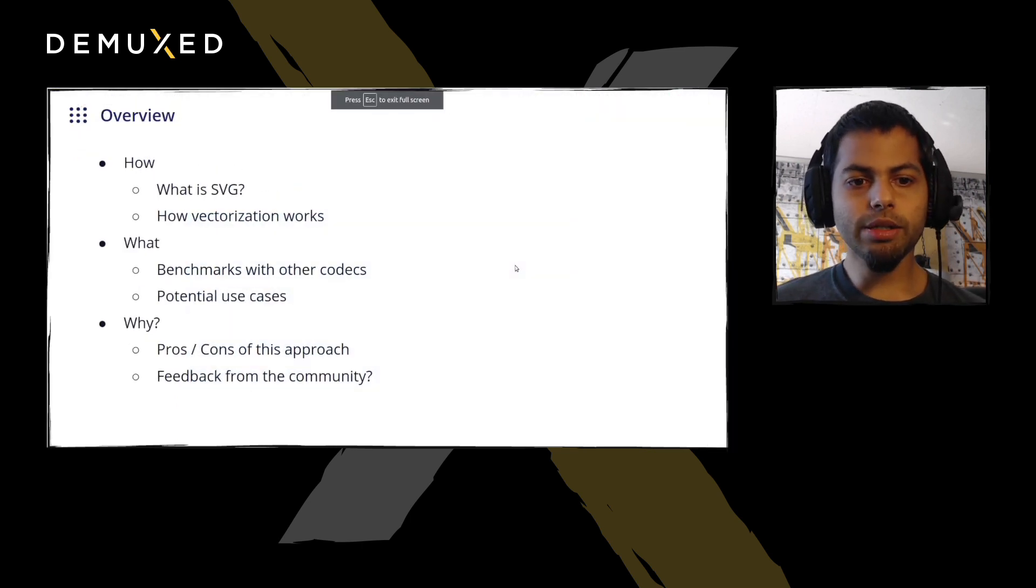For the rest of this talk, we'll basically explain how we got there, essentially how vectorization works, and we'll provide some preliminary results and benchmarks versus existing codecs like AV1 and H.265. We'll also talk about a couple of potential use cases for vectorization. And most importantly, we'd love to get feedback from the community. Does this sound like a viable approach? Is there anything that we haven't thought of? Or especially, is there any interest in contributing to this project going forward?